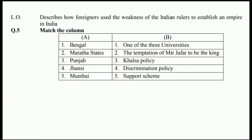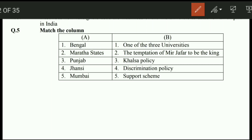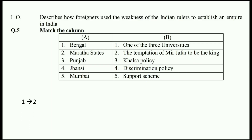Question number 5 is the last question — match the columns. Two columns A and B are given. Bengal matches with: the temptation of Mir Jafar to be the king. Maratha State matches with: support scheme. Punjab matches with: Khalsa policy. Jhansi matches with: one of the three universities. Mumbai matches with: discrimination policy. This completes the paper.